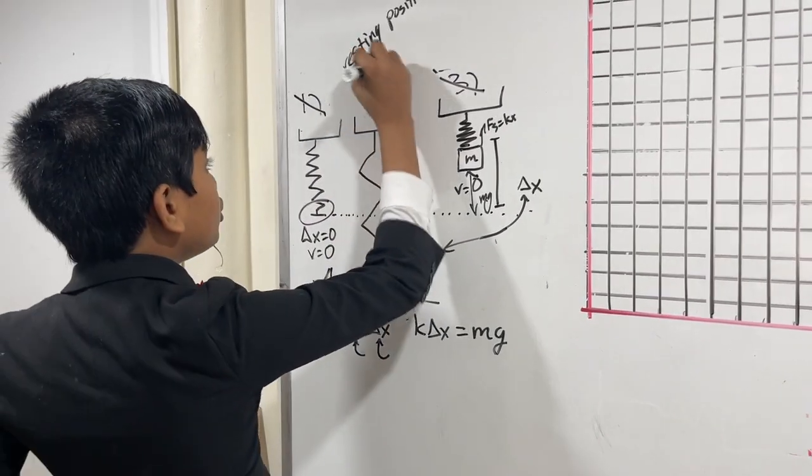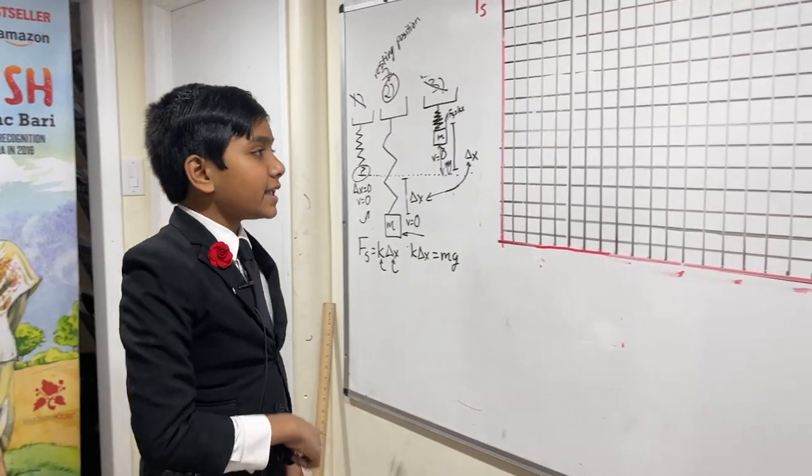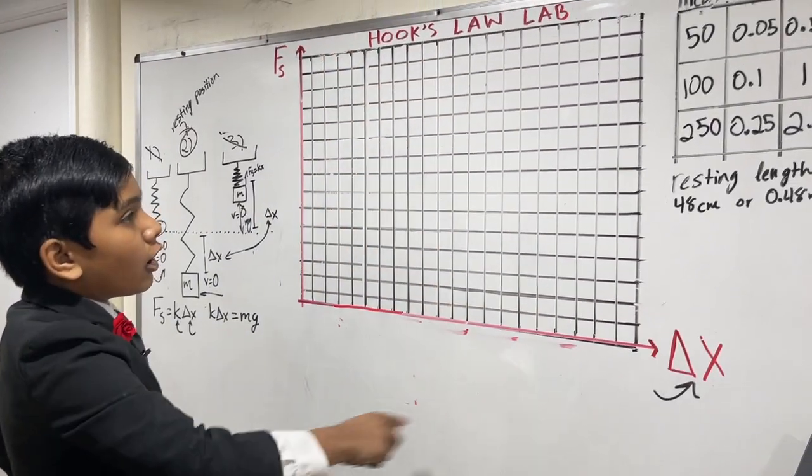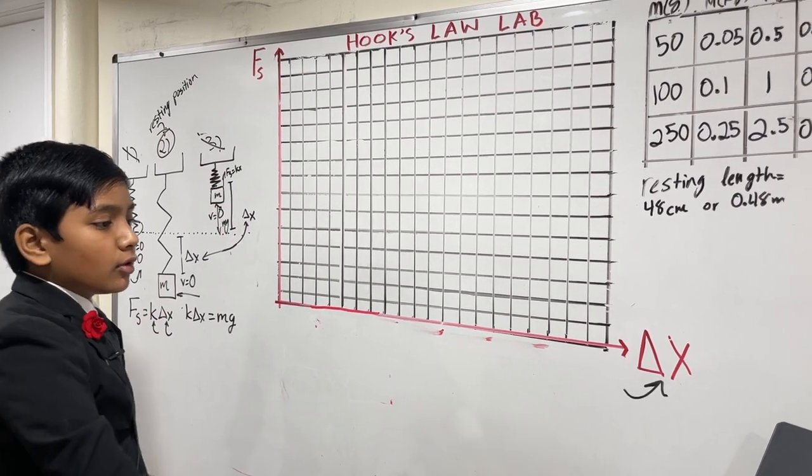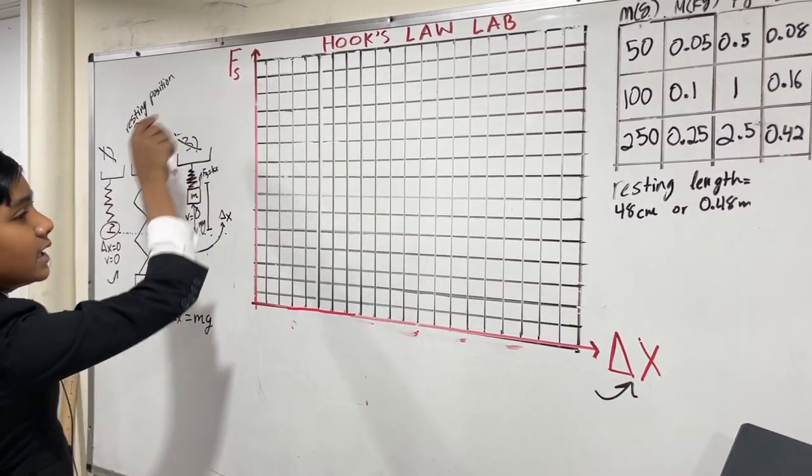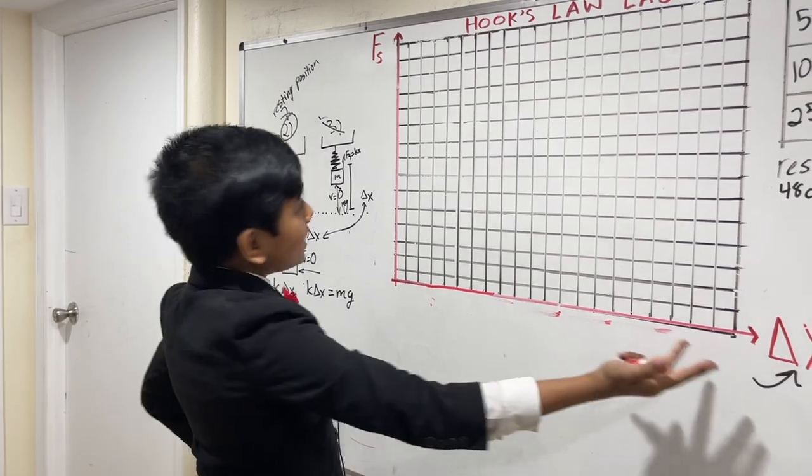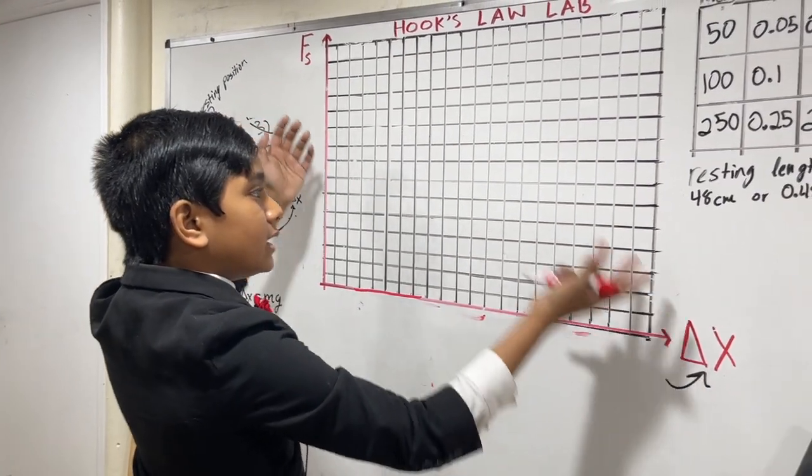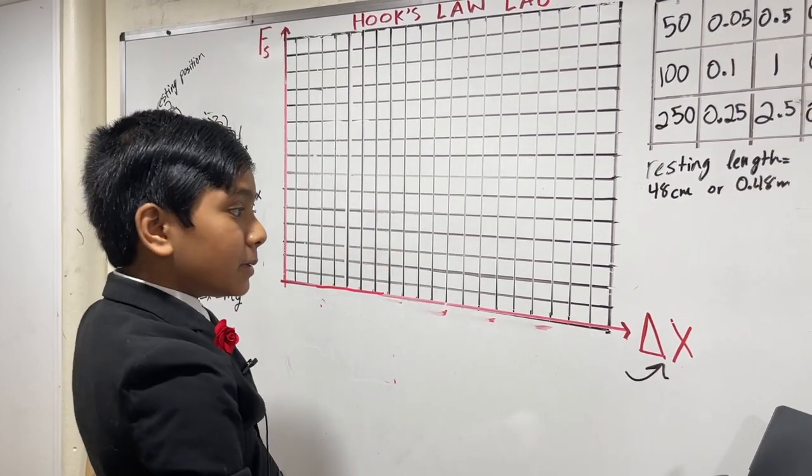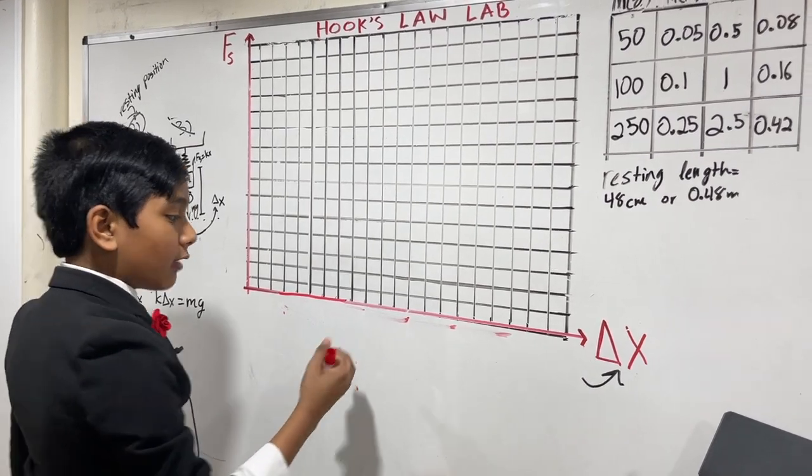For vertical springs, we're going to see that once this spring has settled to a position of equilibrium, k delta x is going to be equal to the weight of this box. Take a moment to think. Is this delta x over here similar to 1, 2, or 3? And just to clarify, 2 is at a resting position.